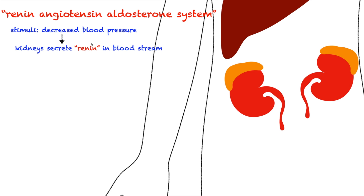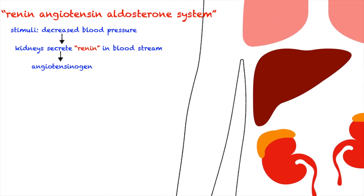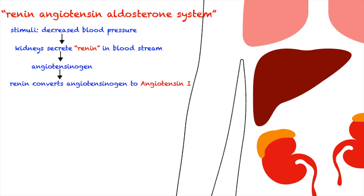This renin alone cannot decrease blood pressure by itself. So what's going to happen is that this renin will interact with a protein called angiotensinogen. This angiotensinogen is actually produced by our liver. So when renin and angiotensinogen meet, renin actually converts angiotensinogen to angiotensin-1.